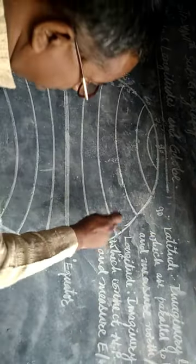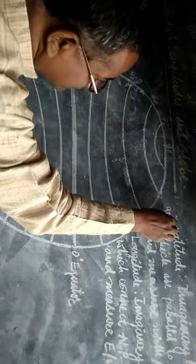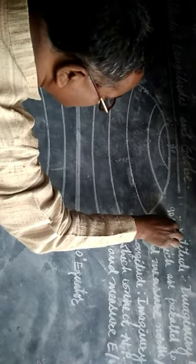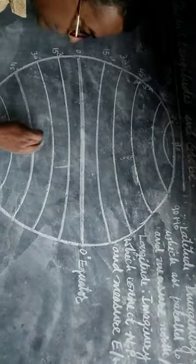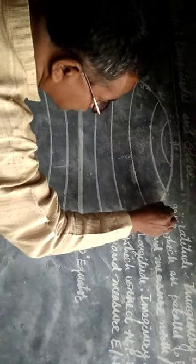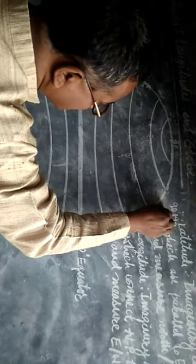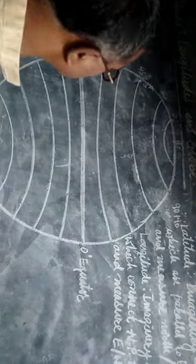90 Northern Hemisphere में और 90 Southern Hemisphere में — तो Total Latitudes हो गए 180।